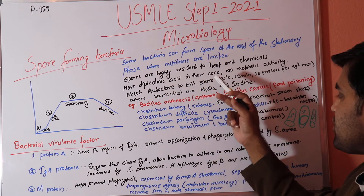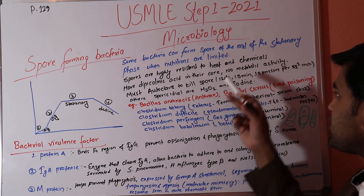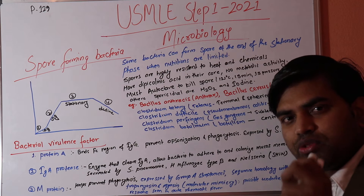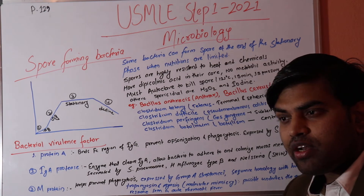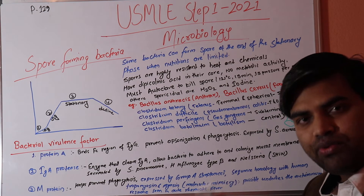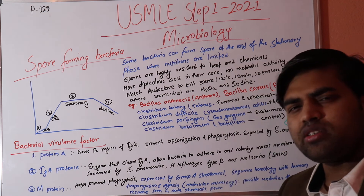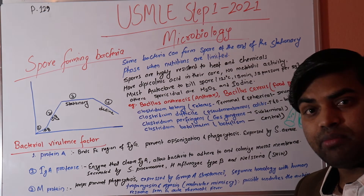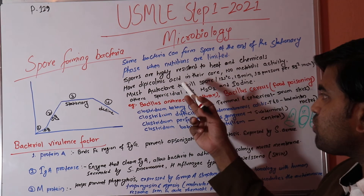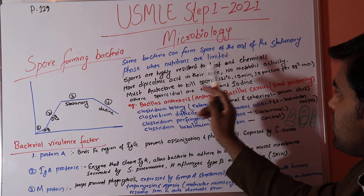Spores have a high dipicolinic acid content in their core, which protects them from heat and chemicals. Spores have no metabolic activity — they do not need nutrition or energy to survive. While vegetative bacteria die within days, spores can survive for years.